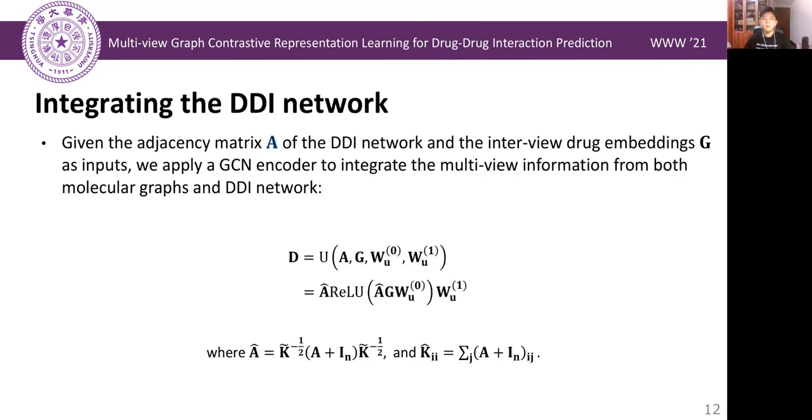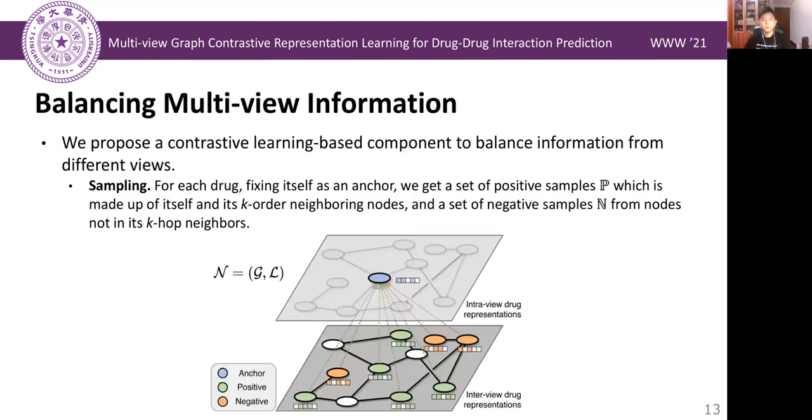Now, we have known both the adjacency matrix of DDI network and intra-view drug embeddings. Therefore, we use a GCN encoder to integrate these two parts of information. However, after many layers of message passing and graph convolutions, the drug representations may be over-smoothed and information from different views may become blurred.